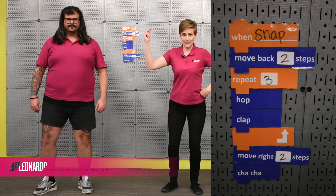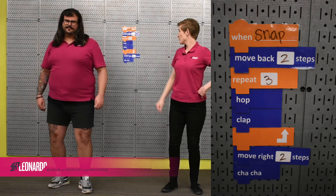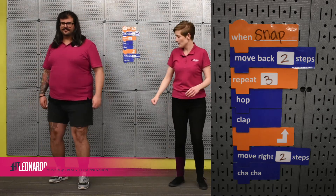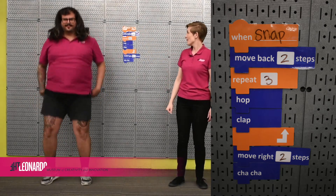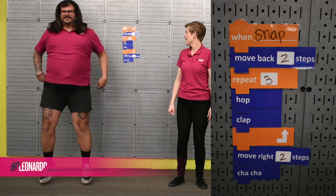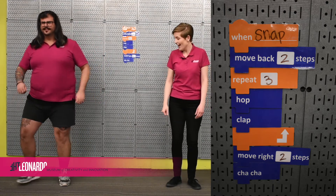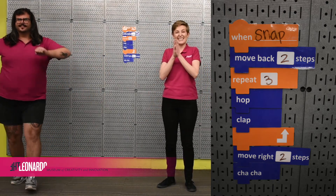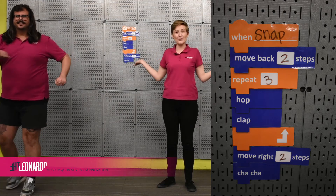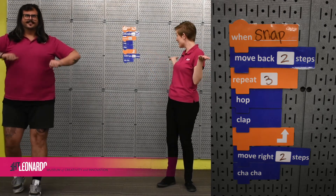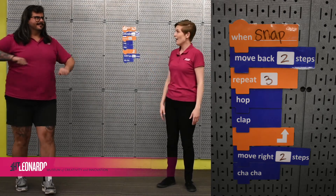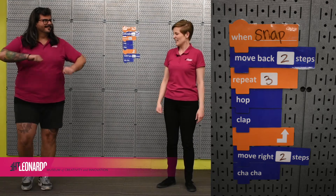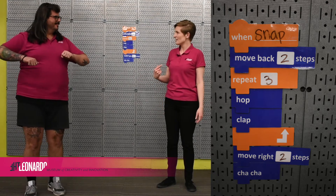Three, two, one — moving back two steps, perfect. Then hop, clap, hop, hop, hop, clap. Then he moves to the right, and then he cha-chas! Awesome — we correctly debugged that, that's fabulous! Thank you robot Trent. Can I do it with you this time? All right, ready? Three, two, one!